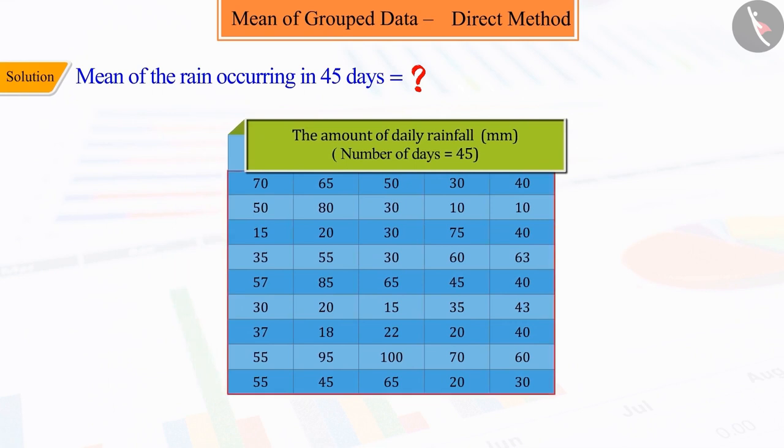From the given example, we can see that it is a system of ungrouped data, where the minimum rainfall is 10 mm and the maximum rainfall is 100 mm.